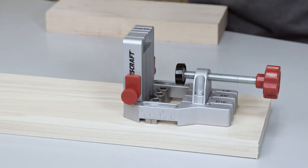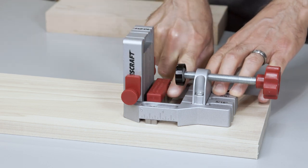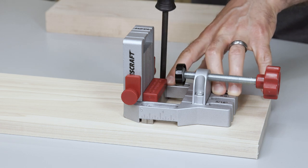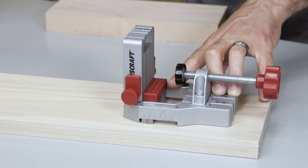If you're using standard half, five eighths, three quarter, or one and a half inch boards, three included spacer blocks will automatically align the drill blocks and help you select the appropriate dowel size.